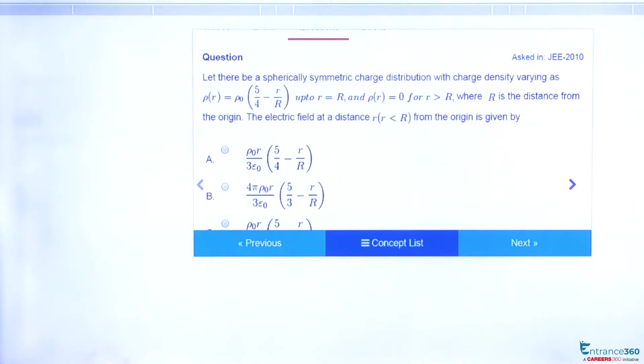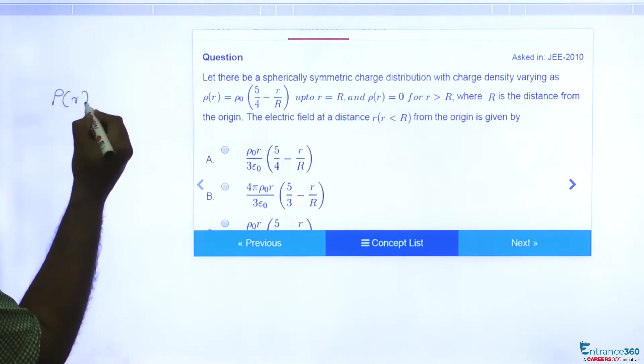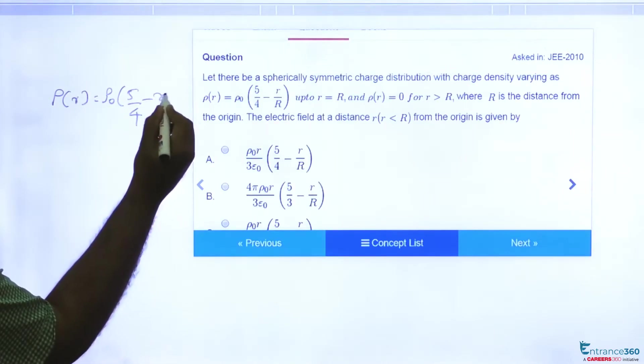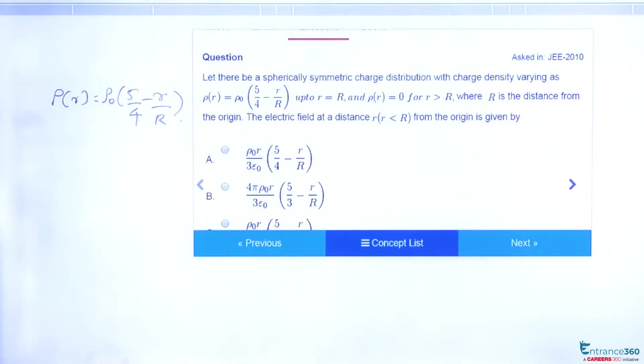So given density is ρ₀(5/4 - r/R). Let's see how to solve this.